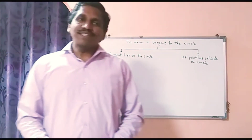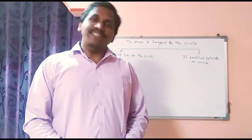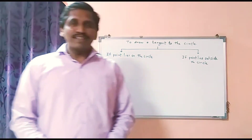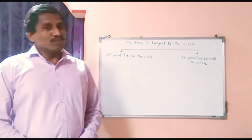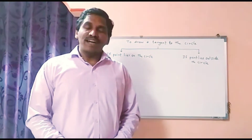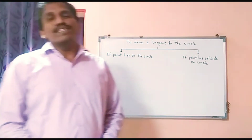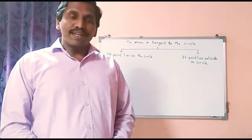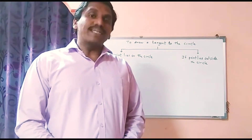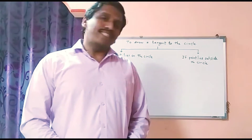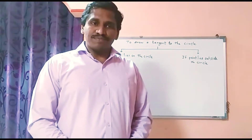Last time we studied how to draw a tangent to the circle if the point lies on the circle using two methods: the first one using the center, and the second method without using the center. Today, if the point lies outside the circle, we will study how to draw a tangent to the circle.